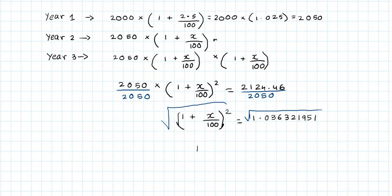So this will give me on the left-hand side 1 + x/100, and on the right-hand side I'm left with 1.017998994, a very lengthy number again.